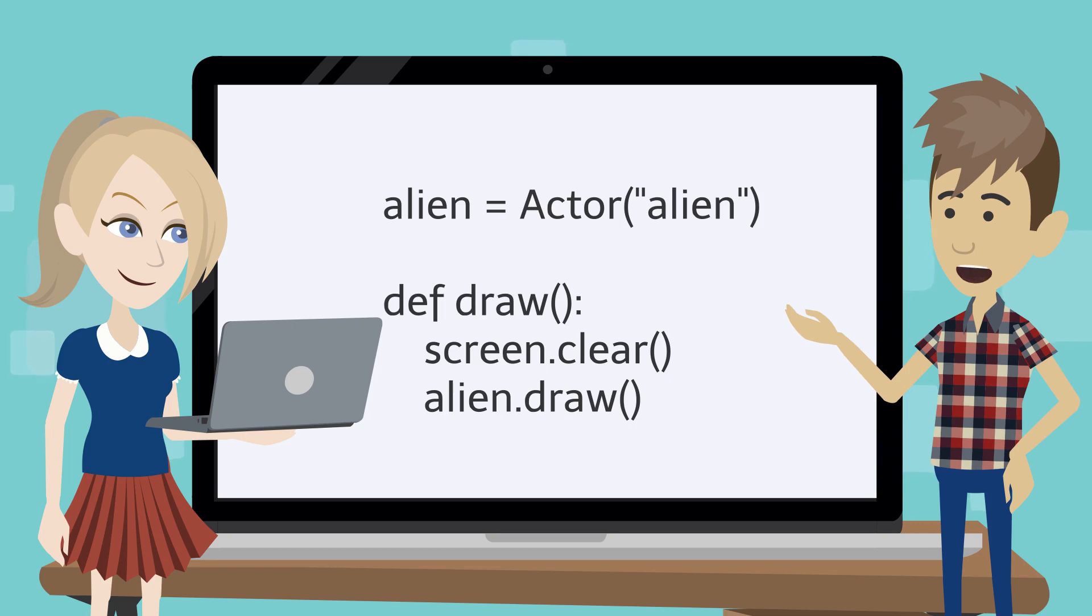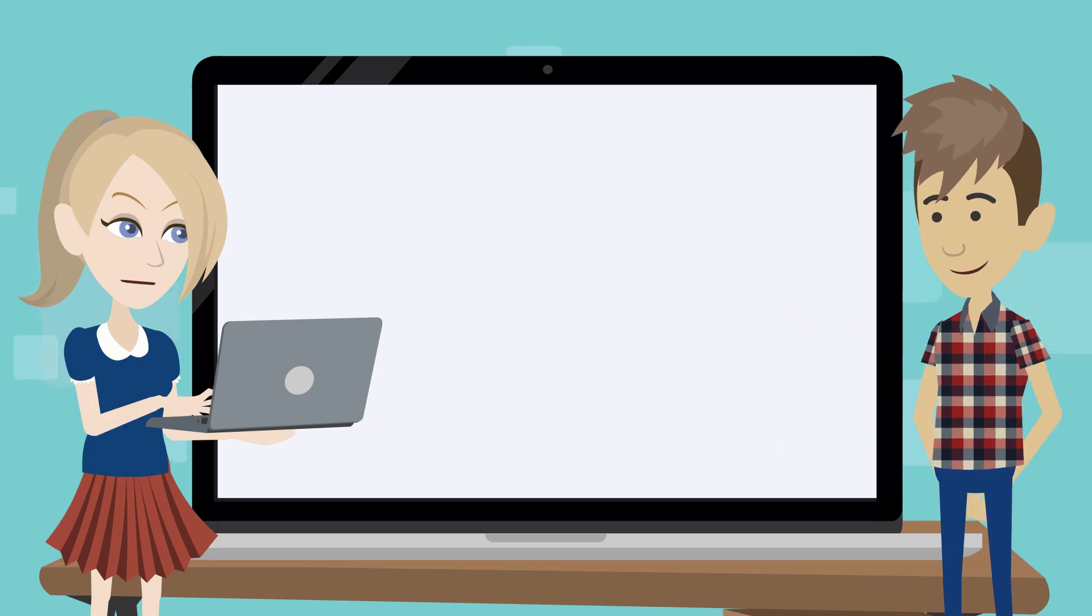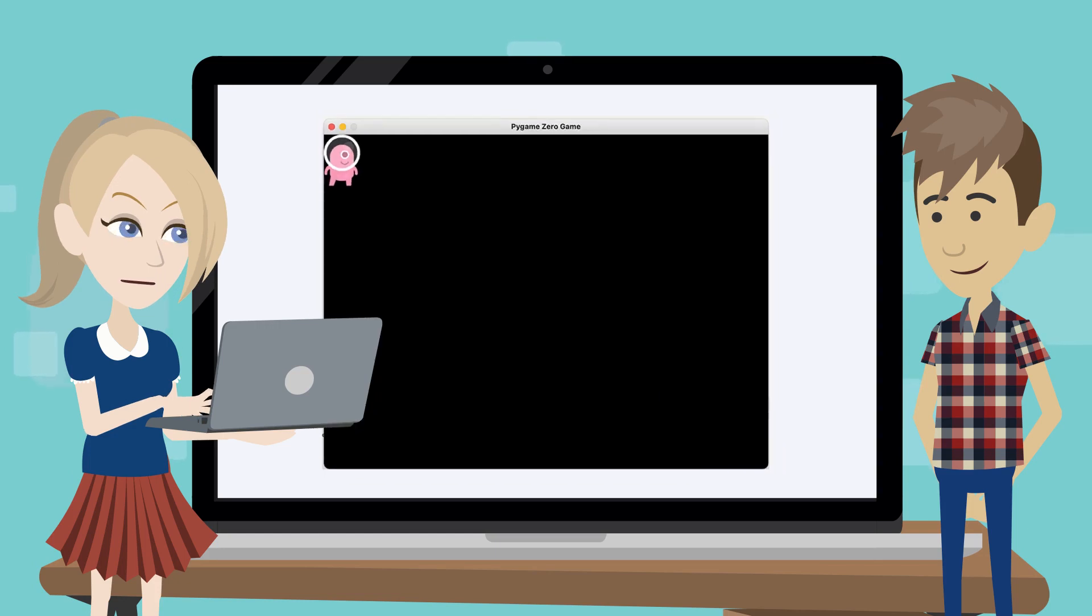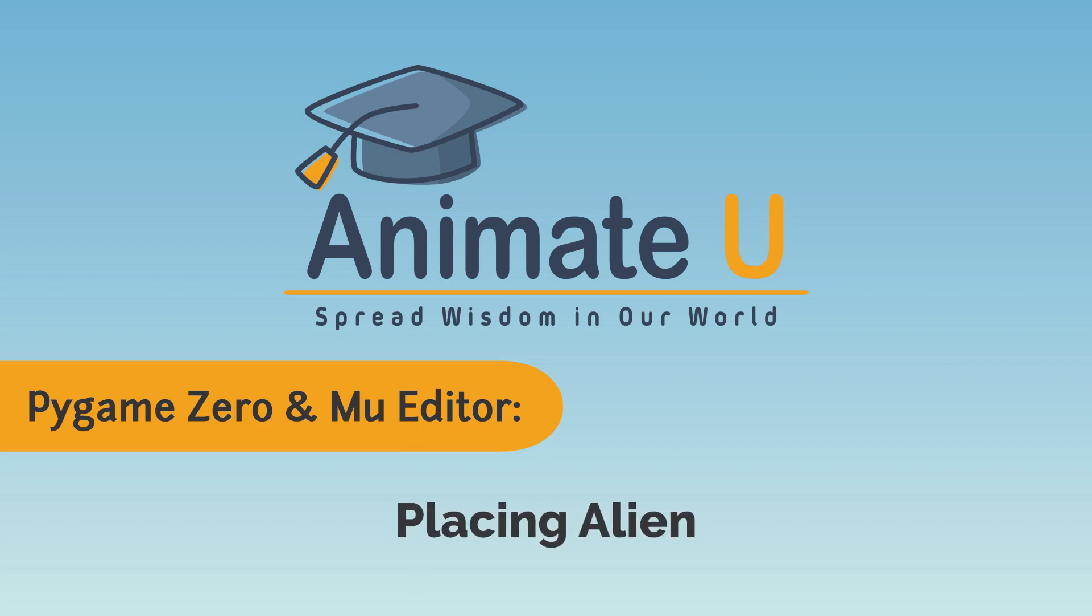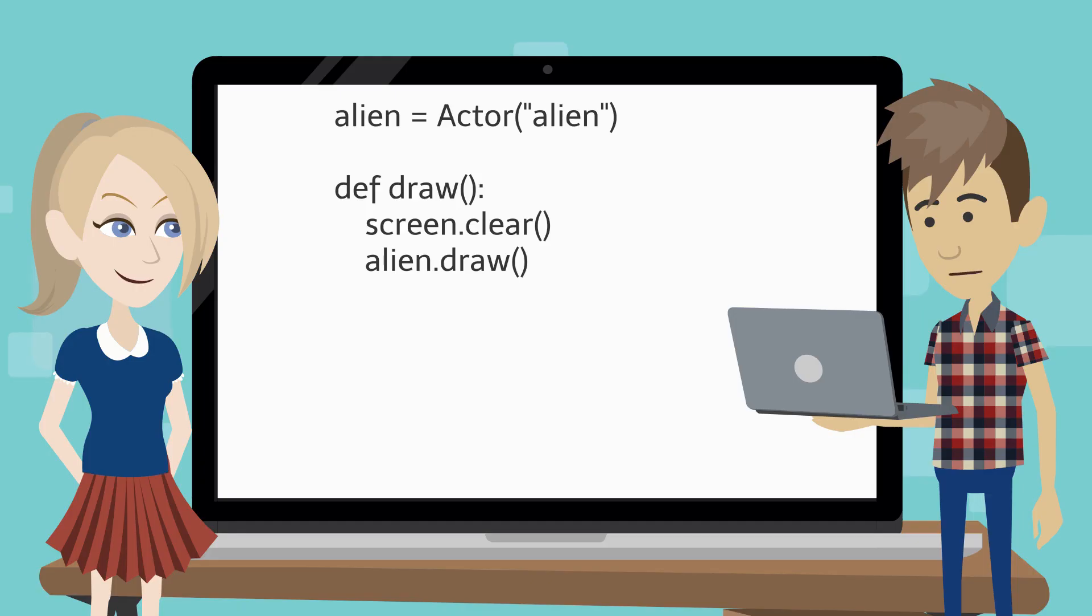Now it's time to test the code. Save the file and play it. An alien in the top left corner of the screen appears. Placing alien. We can change the code to place the alien exactly where we want it on the screen.